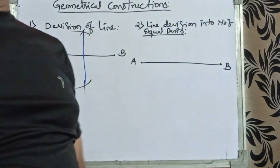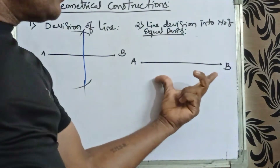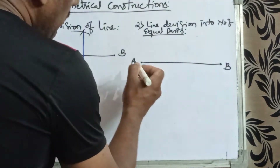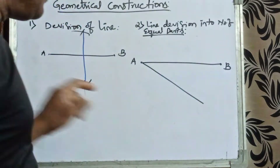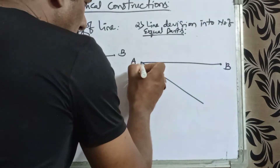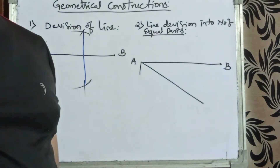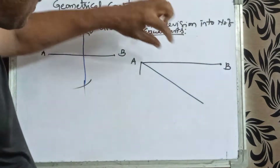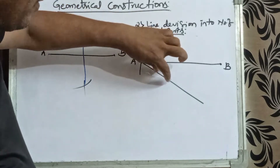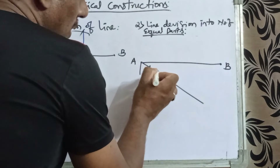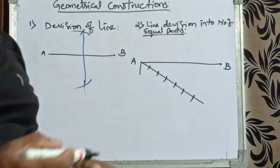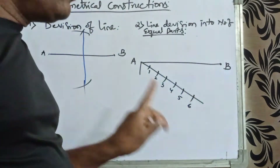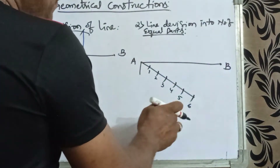Suppose you want three, four, or five equal parts. Without knowing the length or using a scale, we can divide the line. From point A, draw an inclined line at less than 90 degrees — any angle works. On this inclined line, with a compass at any blind radius, mark equal divisions: one, two, three, four, five, six — as many equal parts as needed. Number them accordingly.